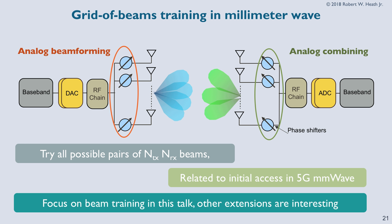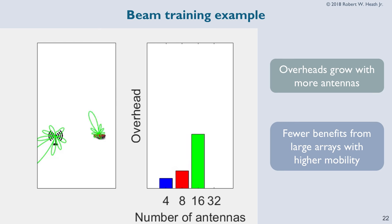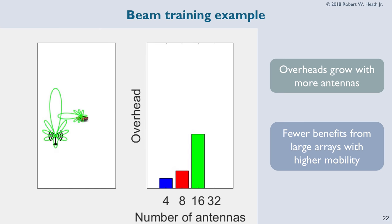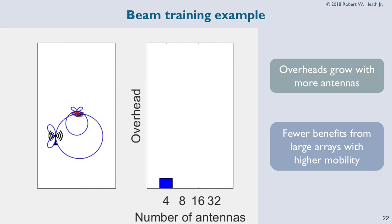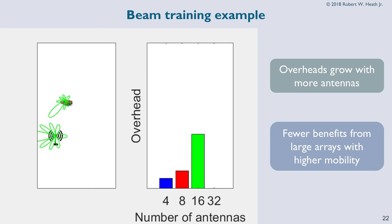This is similar to the initial access part of 5G, except they don't do the search at the receiver. I'm going to focus on configuring the beams from a set of many beams. To give you an idea of the issue: as you get more antennas and the beams get narrower, it takes longer and longer to scan to establish the link. Having larger arrays is good from a communication perspective because the SNR is good, but then it takes too long to connect the beams. In a mobile setting, that overhead becomes substantial.